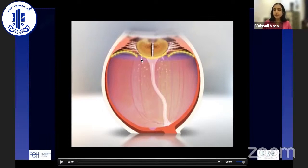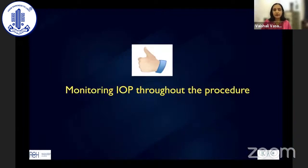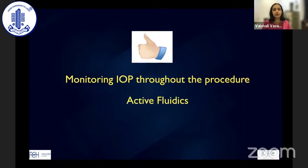As phaco was performed, as soon as we went to foot pedal position one, the whole vitreous face was pushed back, and at position zero it came forward — significant trampolining. When bottle height and flow rate were raised to 40 cc/min, the amplitude of fluctuations increased dramatically, and echoes appeared in the vitreous cavity even with an intact posterior capsule. This led us to understand that the anterior vitreous face can rupture purely from elevated anterior chamber pressure — without any mechanical trauma. This is critical, as inflammatory mediators and infectious agents can then pass from anterior to posterior segment. We need to monitor and, if possible, actively control this pressure.